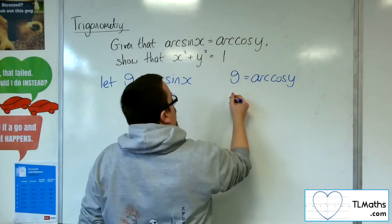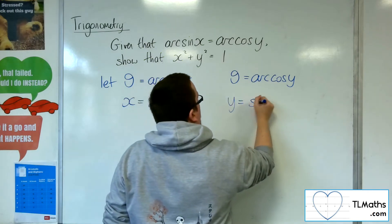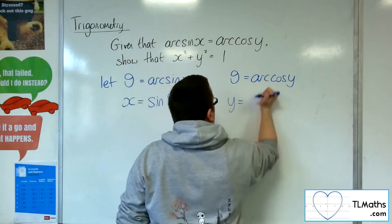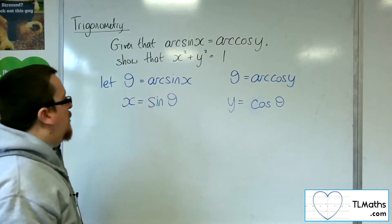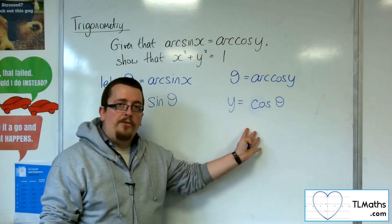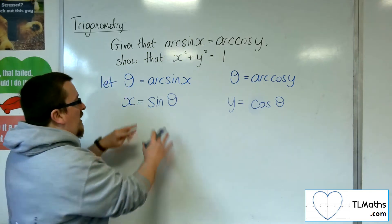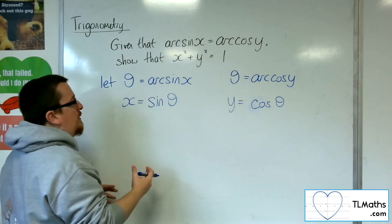And in a similar way here, y must be sine - sorry, not sine - cosine of θ. So we've got x equals sin θ, y equals cos θ. These are like having parametric equations here.